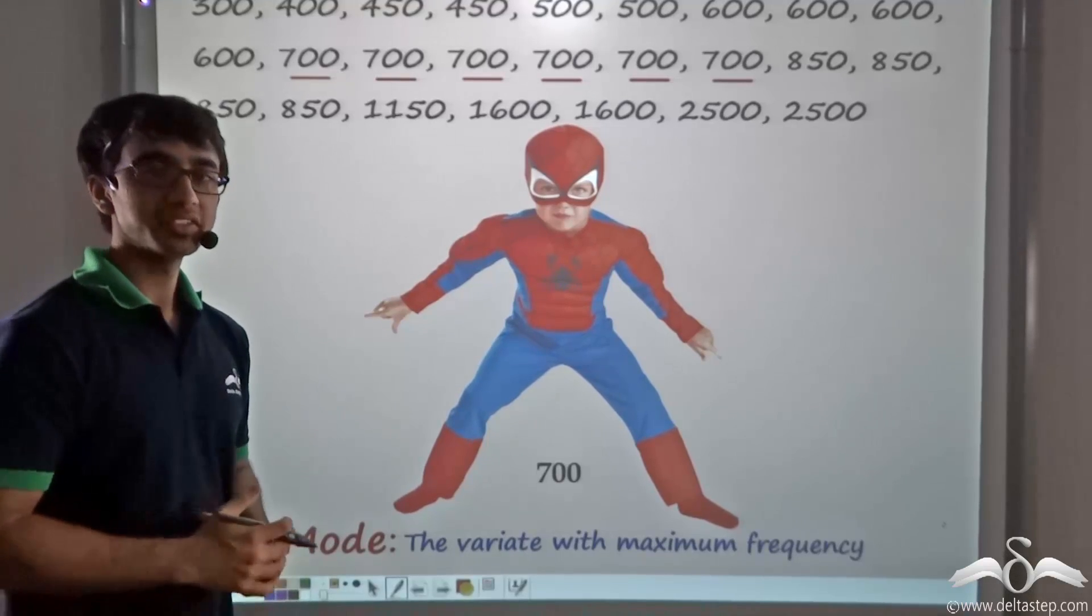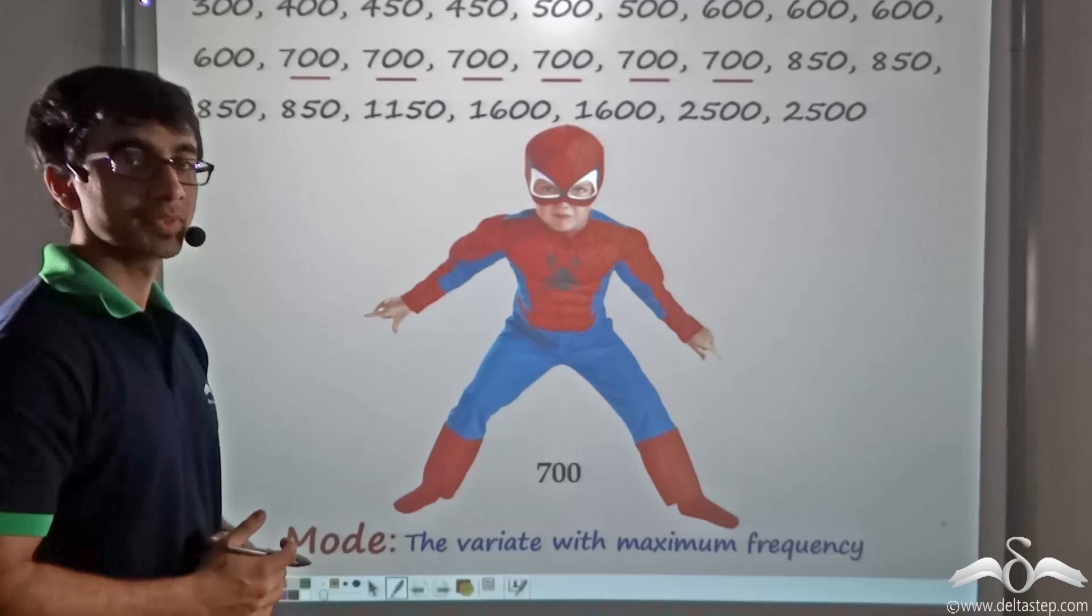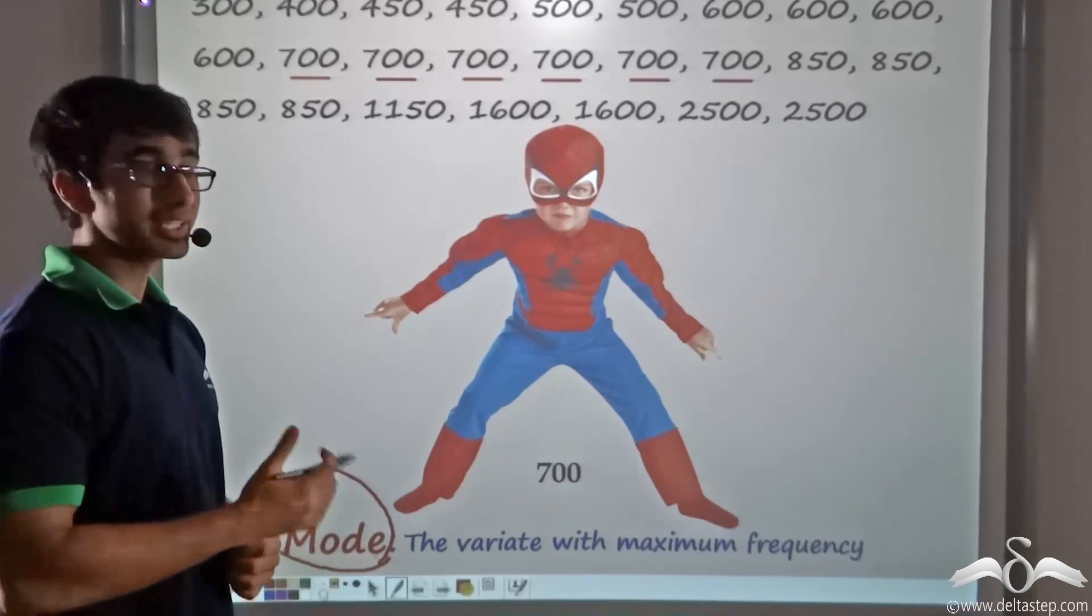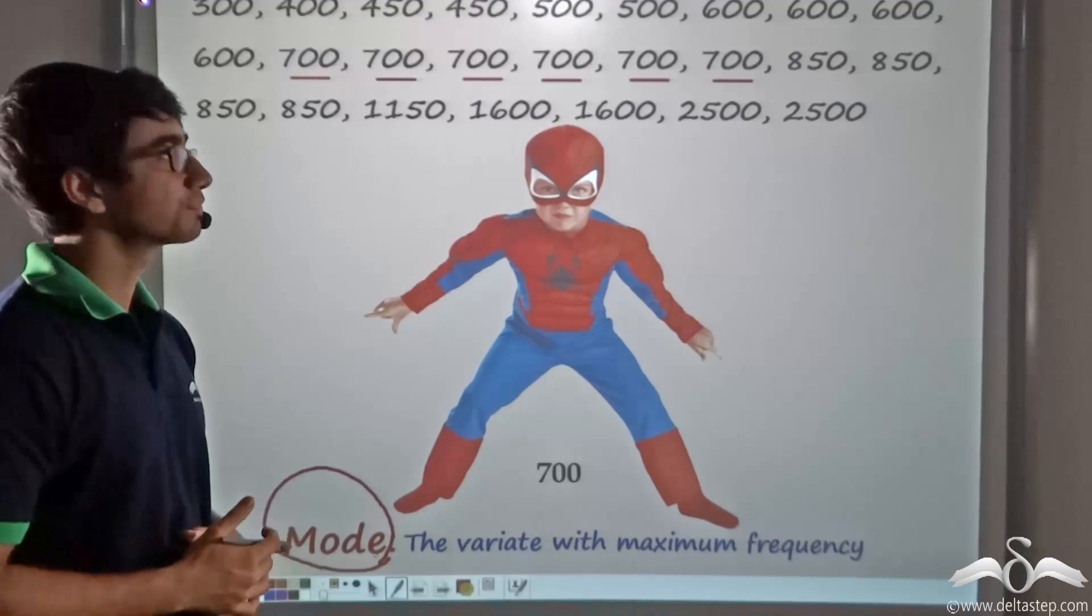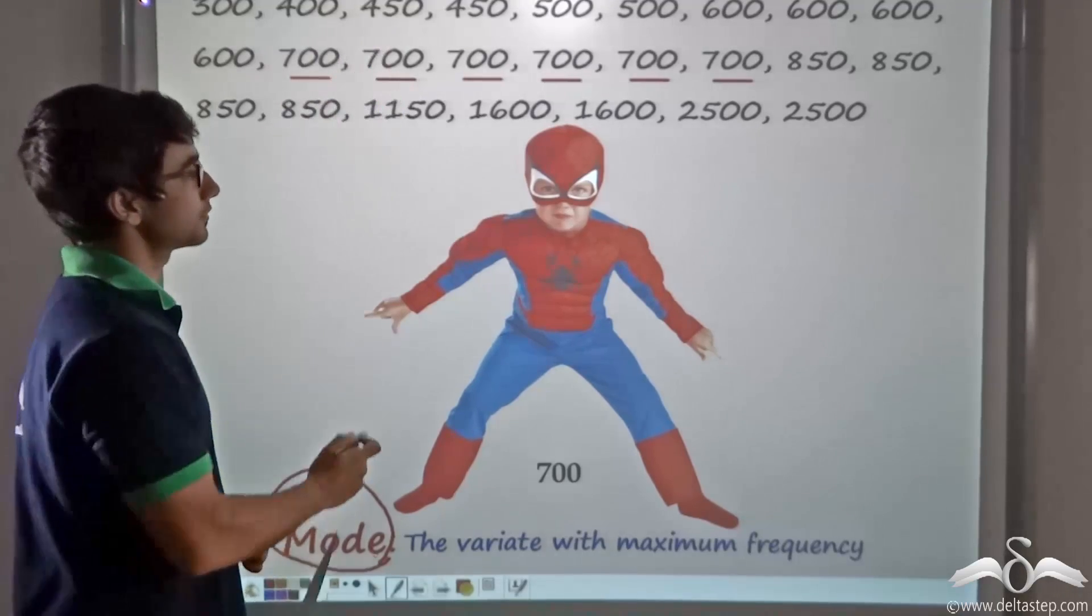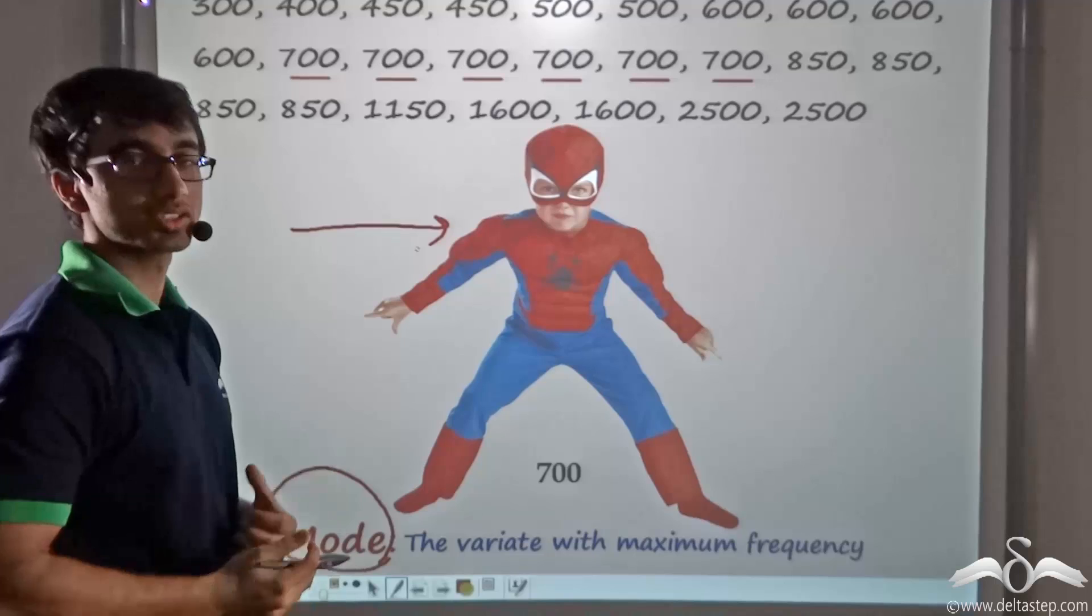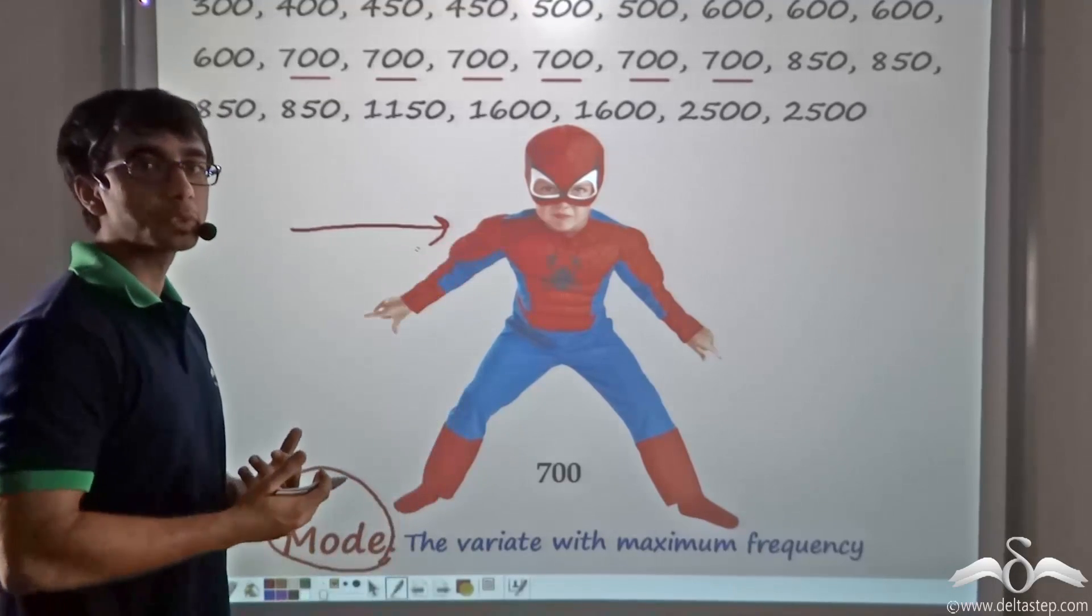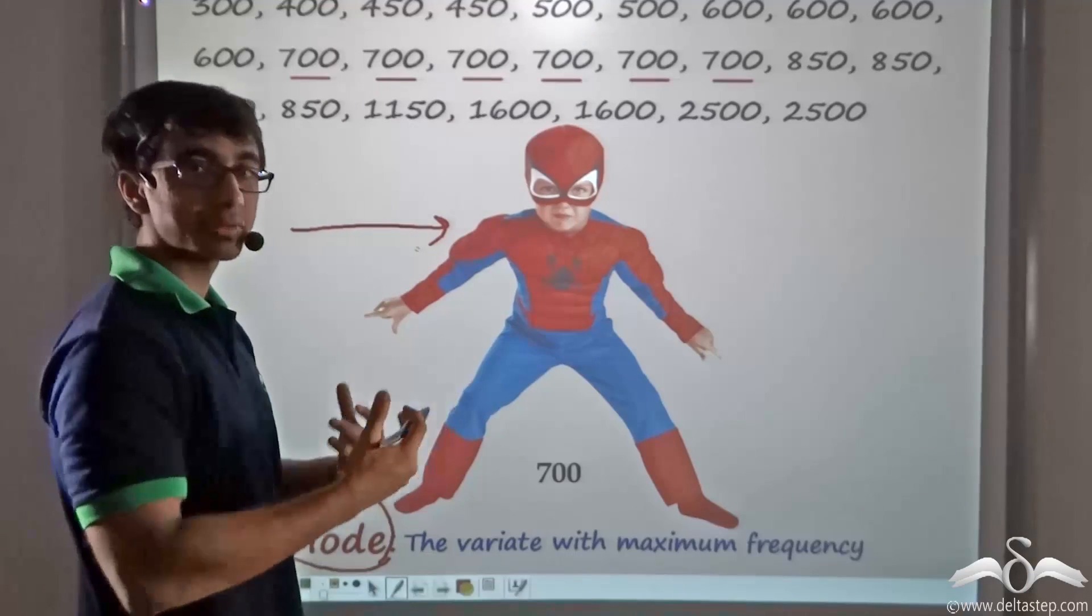We had found in the previous case that the shopkeeper of Just Fancy Stores had used the quantity which we call mode to determine which dress he was selling had sold the most. Here we can clearly see that the dress which costs 700, corresponding to the Spiderman dress, had sold the most. If the shopkeeper in future makes more of these dresses, people would buy more of them and it would maximize his profit.